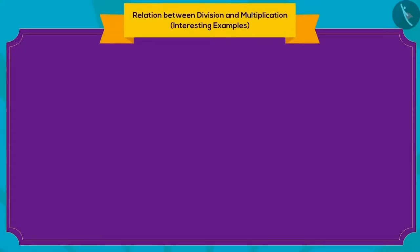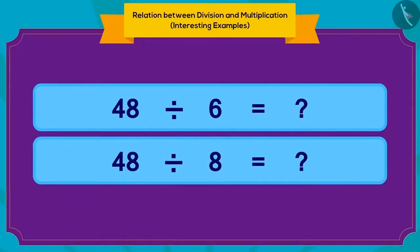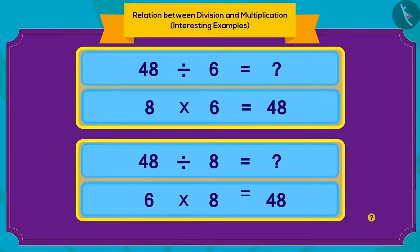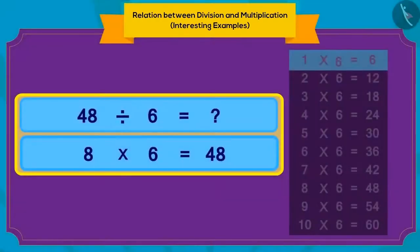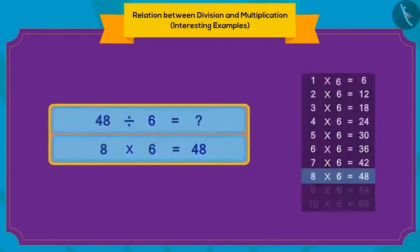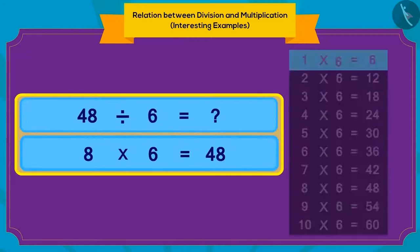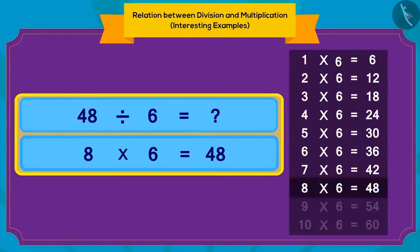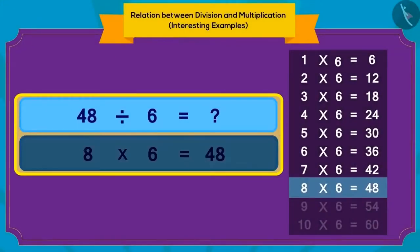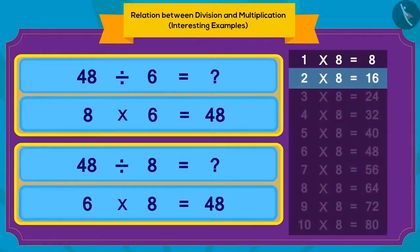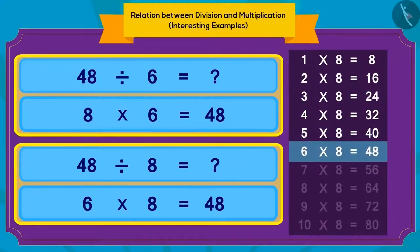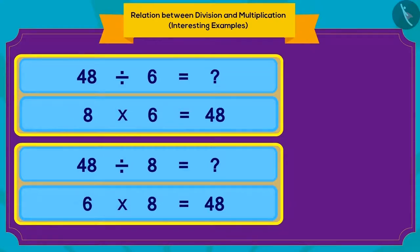Children, can we use multiplication to answer a question on division? Yes. Look at the division and multiplication — can you spot some similarities? If we need to find the answer for a division question, all we need to do is look up the table of six and see what multiplied by six is 48. In the table of six, six times eight is 48. And in the table of eight, eight times six equals 48. We can use multiplication to figure out the answer for division.